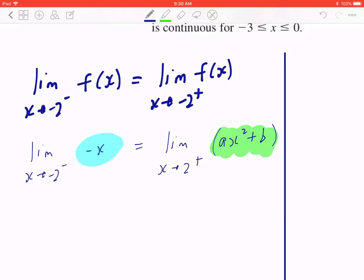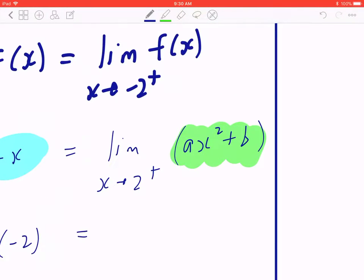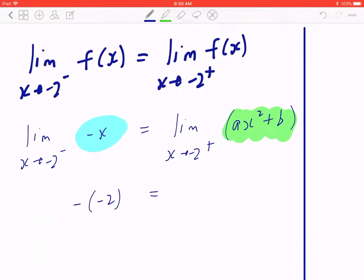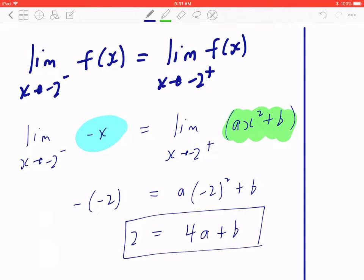Now if you keep going, you go back to basic concepts behind limits. Step 1, you're going to plug in the actual number. So x is approaching negative 2, I plug it in, it's going to be negative times negative 2. On the right hand side, I'm going to plug in the actual number and it's negative 2. I plug it in, so a times negative 2 square plus b. Now if you collect like terms, this is going to be 2, which equals 4a plus b. I'm going to come back to this in a moment.